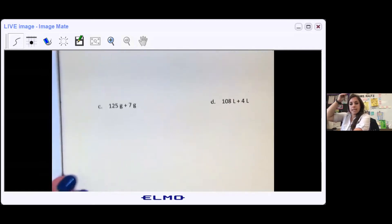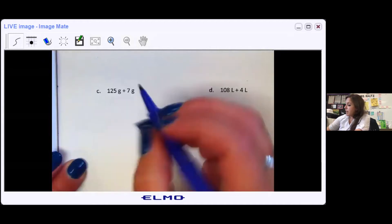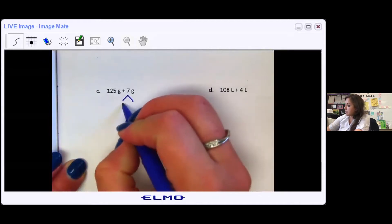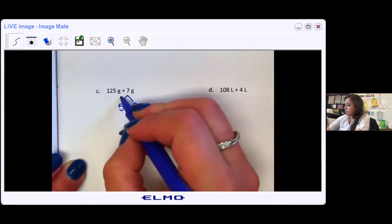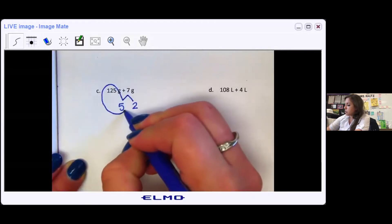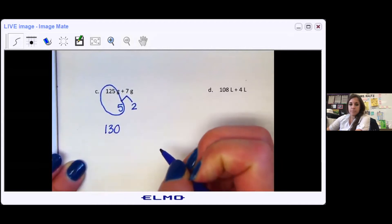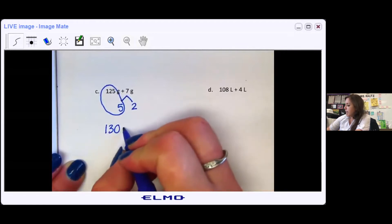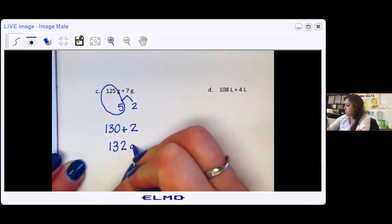Part C, 125 grams plus 7 grams. I split up that 7 grams into 5 and 2 so that I could loop the 5 with the 125 to make a friendly number of 130. Then I'm going to add the 2 to easily mentally make it 132 grams.